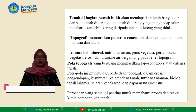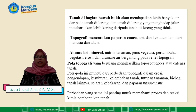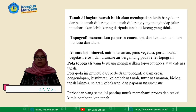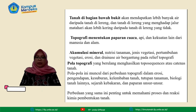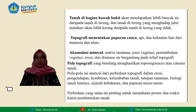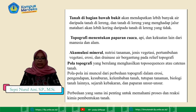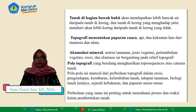Pola topografi yang berulang akan menghasilkan toposequen tanah. Pola-pola ini muncul dari perbedaan topografi dalam erosi, pengendapan, kesuburan, kelembapan tanah, tutupan tanaman, biologi tanah lainnya, sejarah kebakaran, dan paparan unsur-unsur.